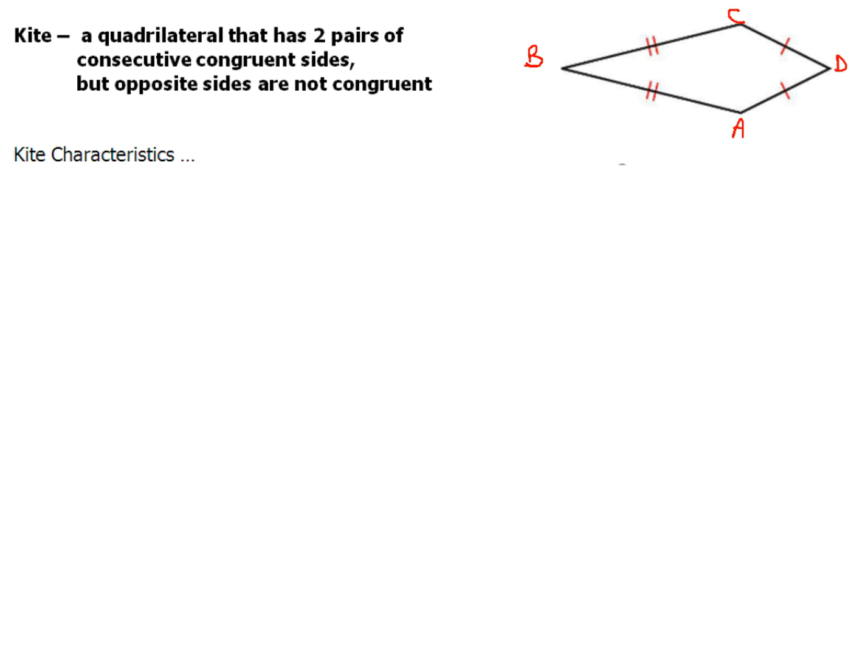Now we're going to take a look at two characteristics of the kite. And actually, there's going to be kind of three. But what I want to first do is call your attention at angle B and angle D. They're going to be given a special name called vertex angles. B and D, these guys are your vertex angles. A and C are your non-vertex angles.